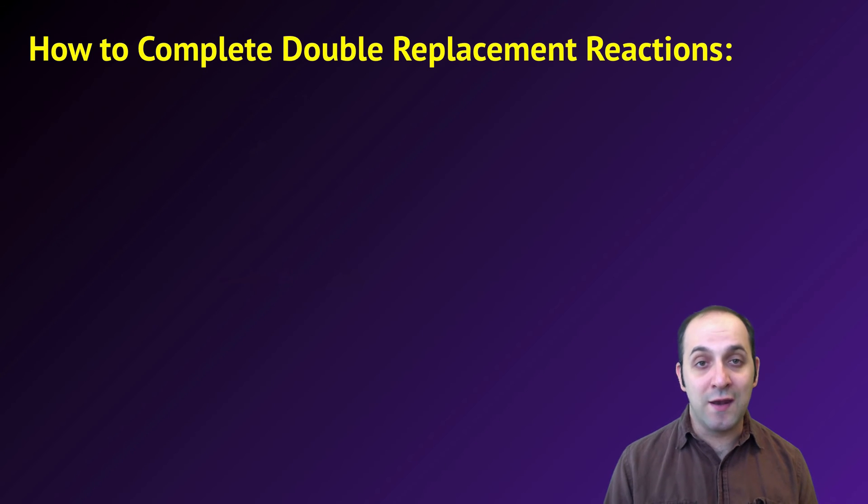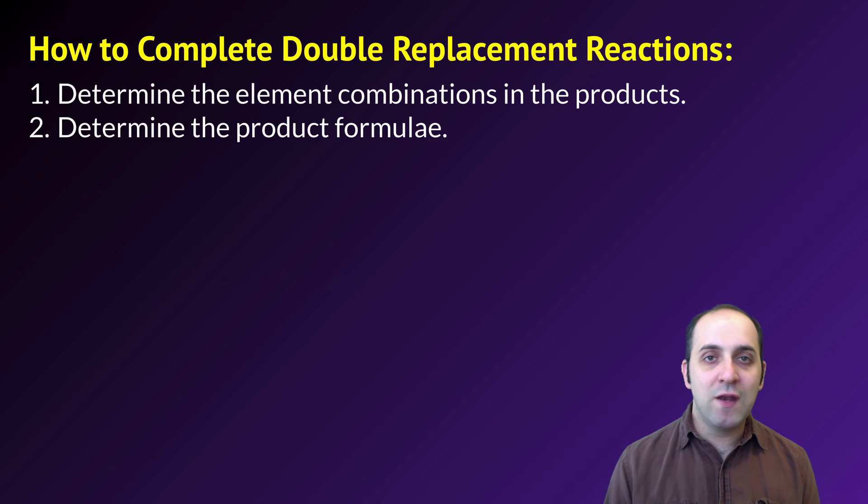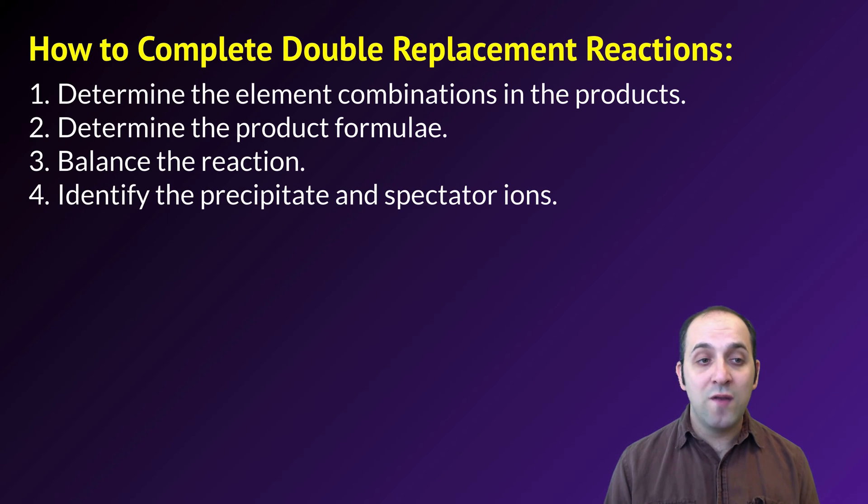Now that we have a handle on solubility and insolubility, we can figure out how to complete double replacement reactions. The first thing you want to do is to figure out the element combinations in the products. Once we know that, we need to figure out the product's formulas, and then we can balance the reaction. Once that's done, we can figure out what the precipitate is and what the spectator ions are, and that's the end of the process.